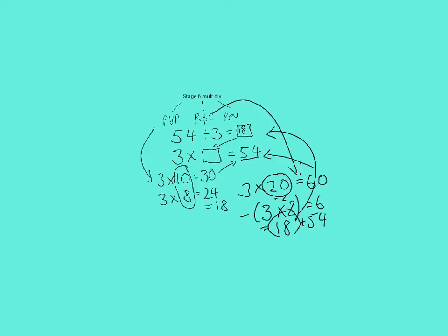So just to clarify, place value partitioning. I multiplied the tens and ones separately. So I went 3 times 10 is equal to 30, and then 3 times 8 is equal to 24. I then added 10 plus 8, which gave me 18.